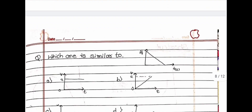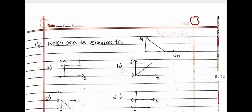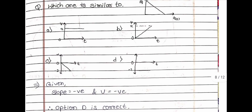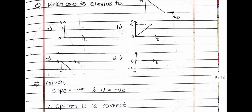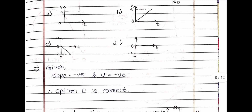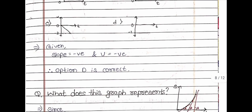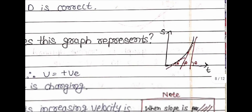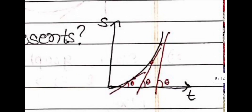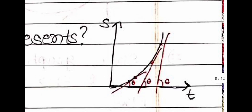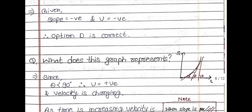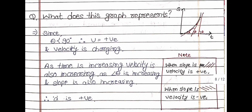Question three asks which diagram — A, B, C, or D — is similar to the given diagram. The solution is here. Option D is correct. Another question asks what the graph represents. Let us zoom the graph. The answer is here.